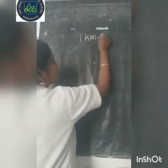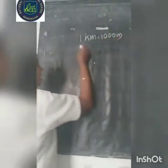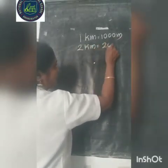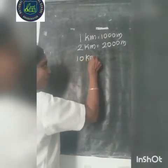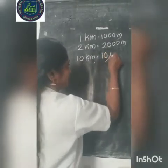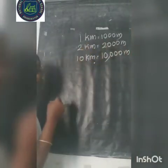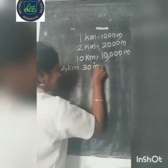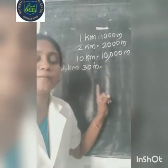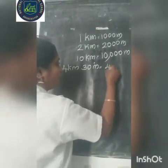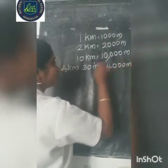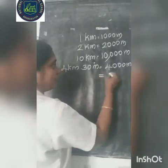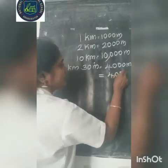We can do some more problems. 1 kilometer is equal to 1000 meter. 2 kilometer is equal to 2000 meter. And 10 kilometer is equal to 10,000 meter. What about 4 kilometer 30 meter? We know that 4 kilometer is equal to 4000 meter. 4000 meter plus 30 meter equals 4030 meter.